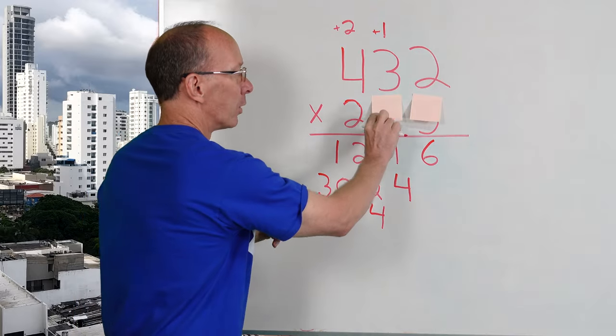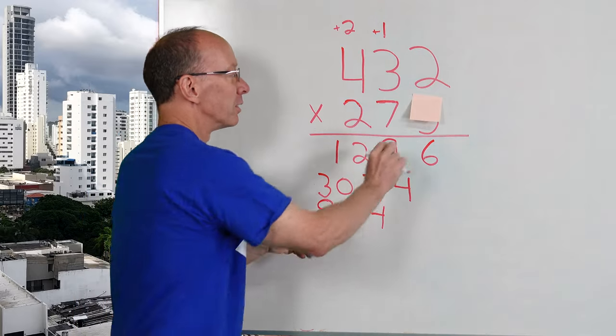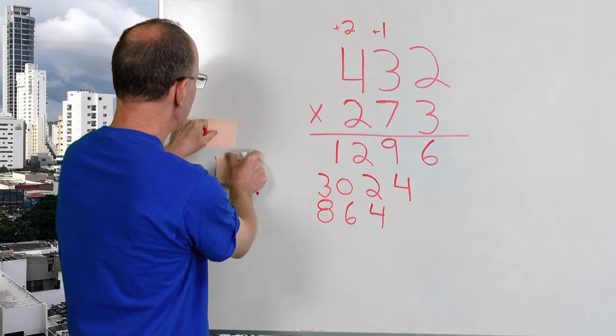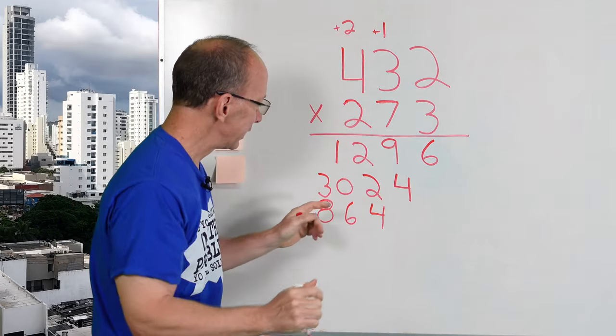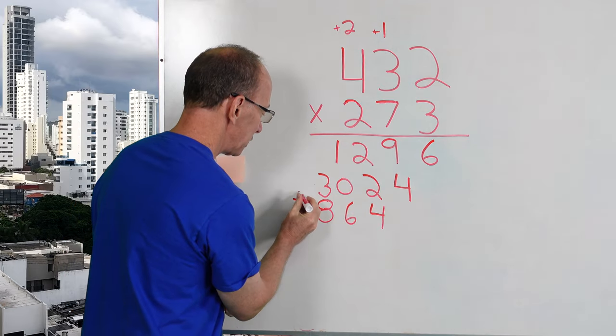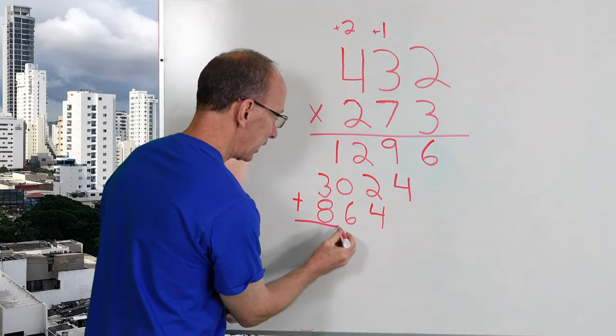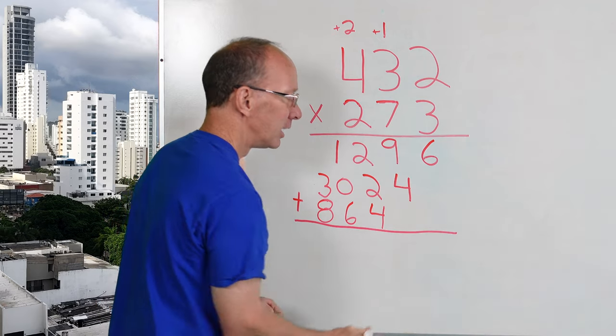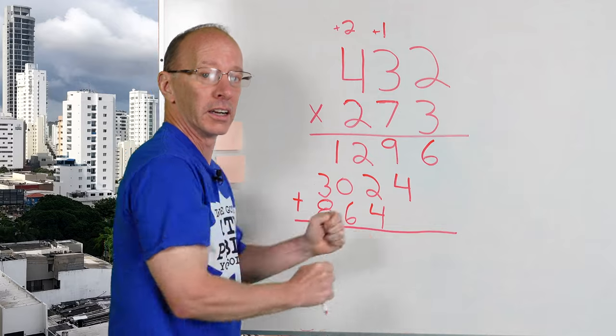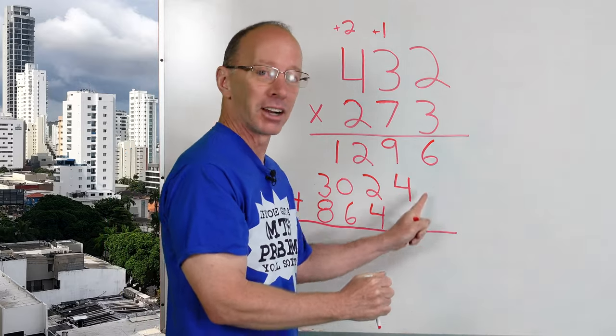We're all done. If you want to, you can take these little sticky notes off there. See, it wasn't too bad. It wasn't too scary. Alright. So now we're going to use addition and we'll put the addition sign here and a line going all the way over here.